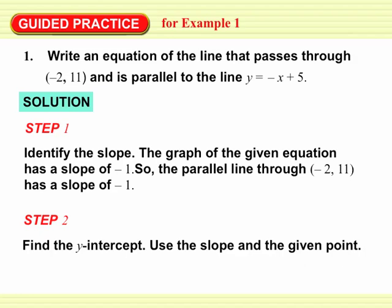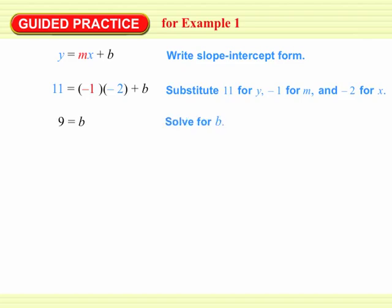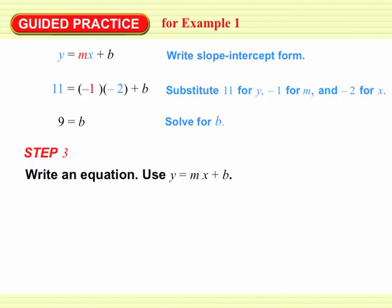Next, we need to find the y-intercept. We use the slope of negative 1 and the point negative 2 comma 11. We write the slope-intercept form and substitute 11 for y, negative 1 for m, and negative 2 for x. The negative 1 is the slope from the previous step, and 11 and negative 2 are the coordinates of the point on the line. Solving for b gives us b equals 9, so the equation is y equals negative x plus 9. This line is parallel to the given line and passes through negative 2 comma 11.